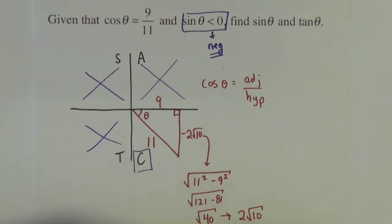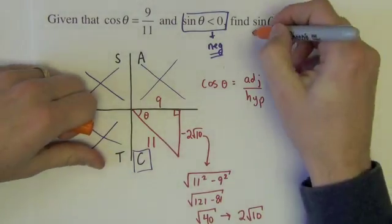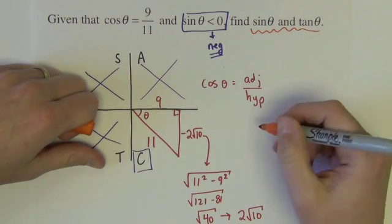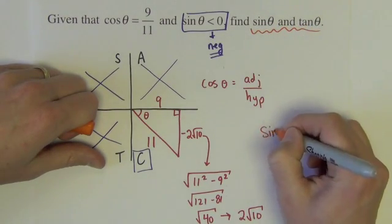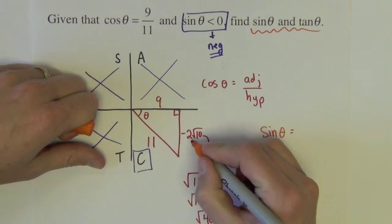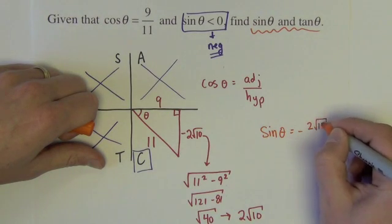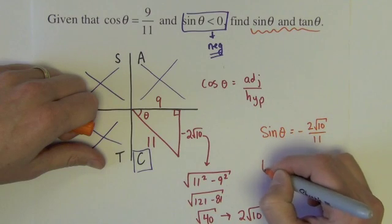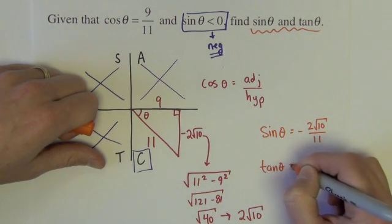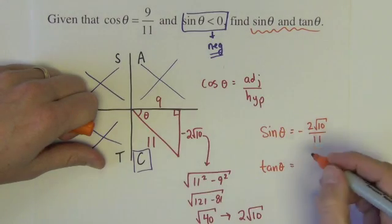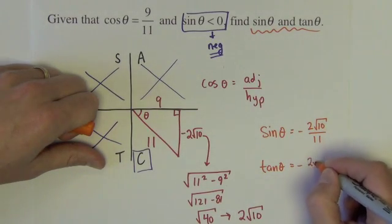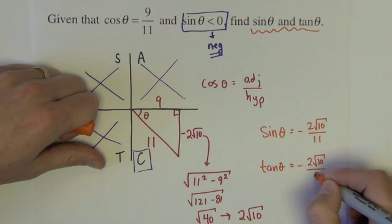Okay, once the triangle is completely constructed, now we're finally ready to answer what was asked. Sine of theta is equal to the opposite over hypotenuse, so negative 2 square root of 10 over 11. And the tangent of theta is equal to opposite over adjacent, negative 2 square root of 10 over 9.